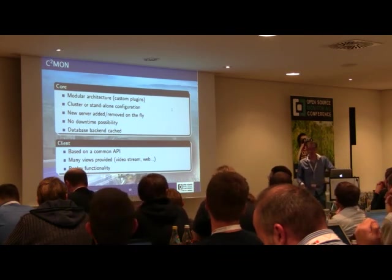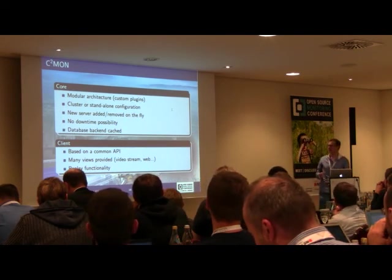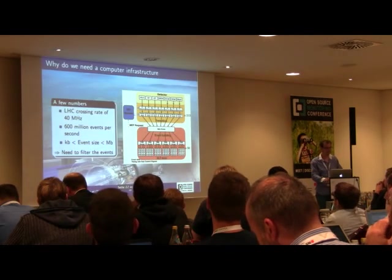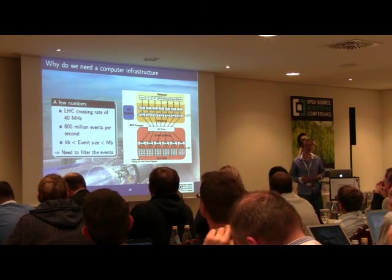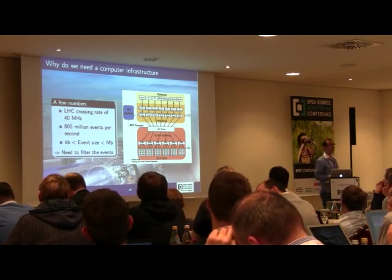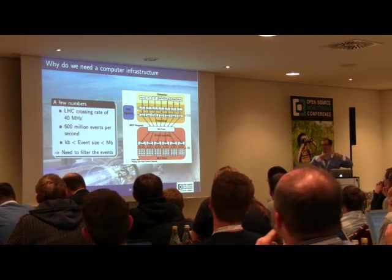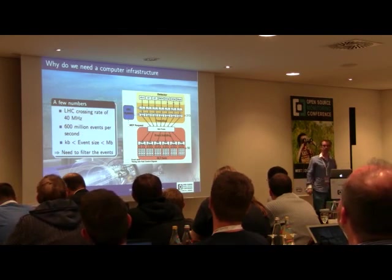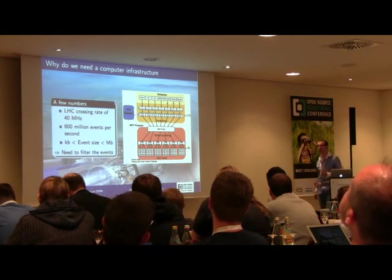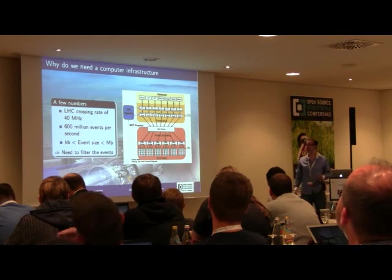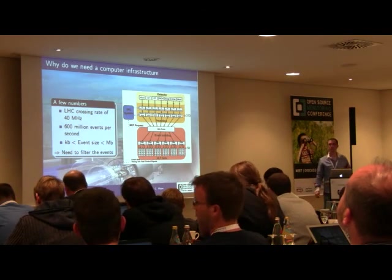This is how the accelerator group addresses monitoring. Now let's look at the experiments. The LHC has a crossing rate of 40 MHz, which means every second you have between 600 million and one billion collision events. The data representing one event runs from a few kilobytes to a few megabytes. No computer facility is able to transport and store a few megabytes 600 million times a second, so you need to filter the events.